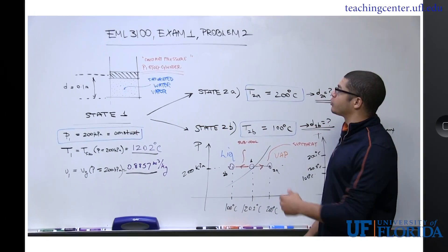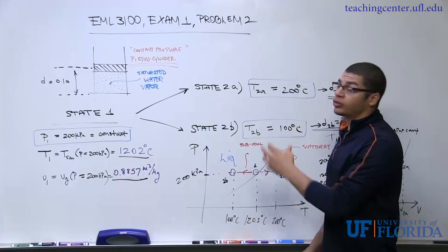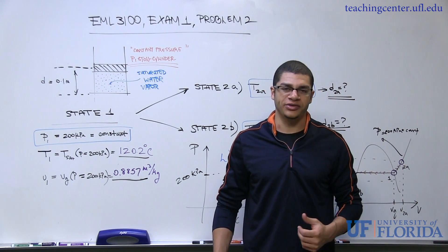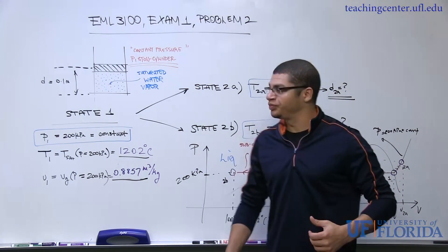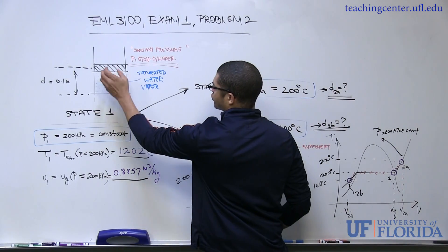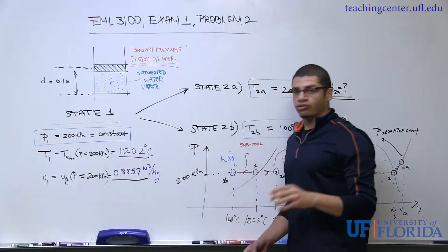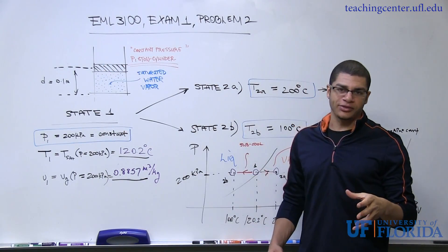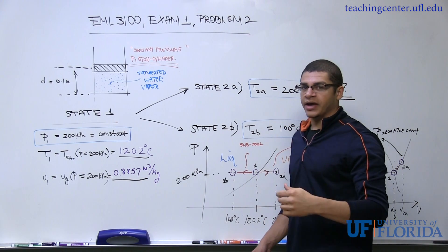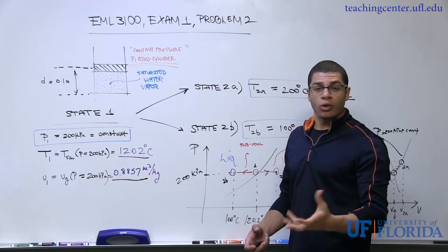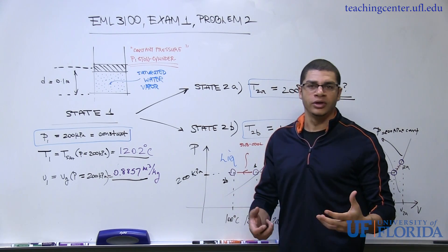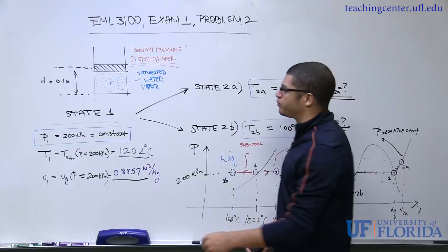I'll be going over the solution to problem number two on exam one for EML3100 for the spring 2016 semester. In this particular problem we're given a piston-cylinder assembly and we're told directly in the problem statement that it's a constant pressure piston-cylinder, which is kind of a very similar analysis or configuration to the first problem on this exam.